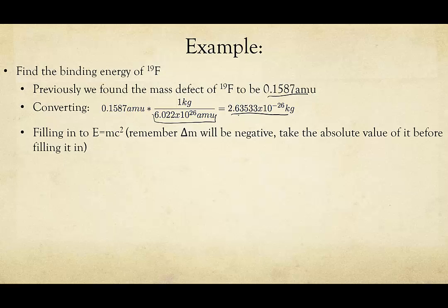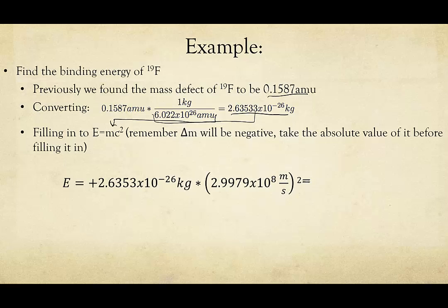We fill this into E equals mc squared. Now typically, your mass defect ends up being negative, depending on how you take the subtraction. The sign is not super important here. You just need to always know that the nuclei itself is smaller than the component parts. So, just make sure when you do binding energy, that you always have this be positive.